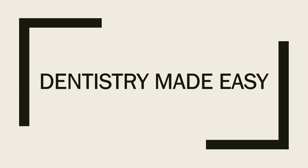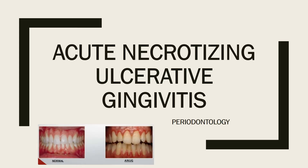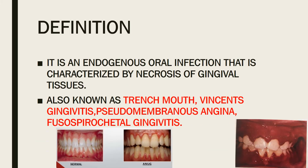Welcome back to the channel 'Dentistry Made Easy.' The topic for today is Acute Necrotizing Ulcerative Gingivitis from periodontology — a very important topic from an exam point of view. The first point is the definition: it is an endogenous oral infection that is characterized by necrosis of gingival tissue.